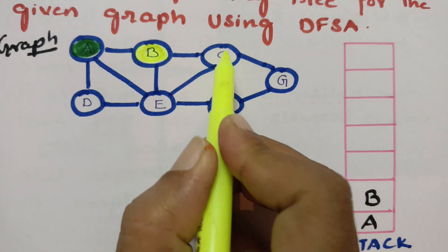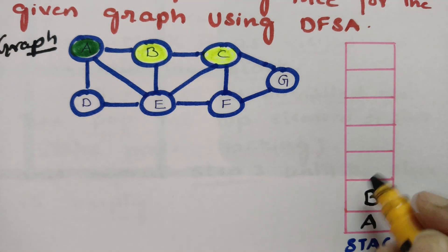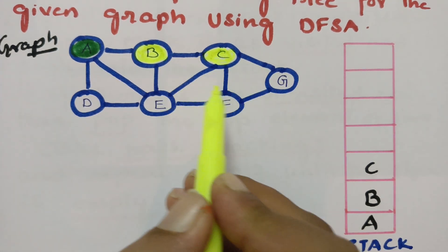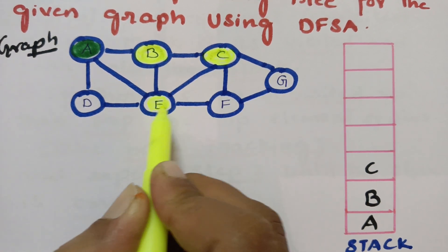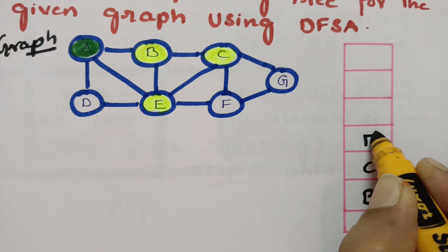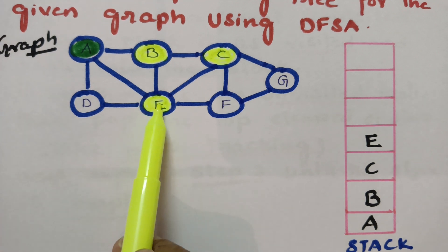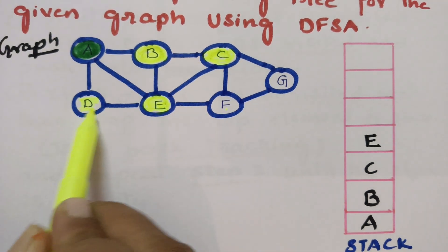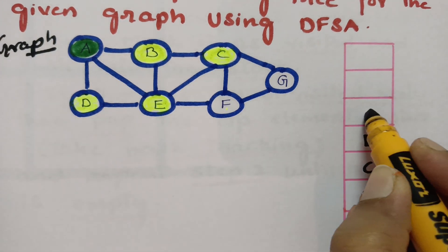After visiting C, I push it into the stack. From C, there are three children: E, F, and G. I am selecting the left child, E. From E, there are two adjacent unvisited vertices: D and F. I am visiting the left child D and pushing it into the stack. After D, the adjacent vertices A and E are both already visited, so there is no way to go from D.